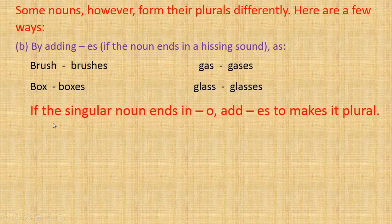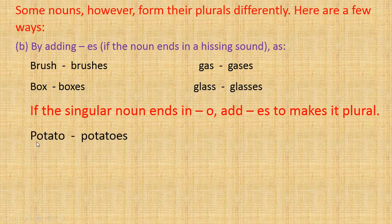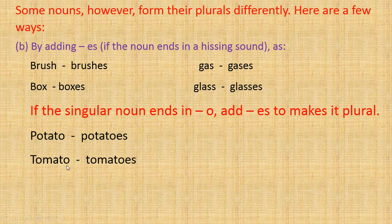Next: if the singular noun ends in O, you will add -ES to make it plural. For example, potato — the last letter is O, so while making it plural we use -ES: potato→potatoes. Tomato→tomatoes. The last letter is O so we add -ES.